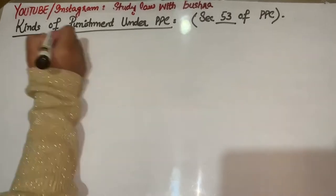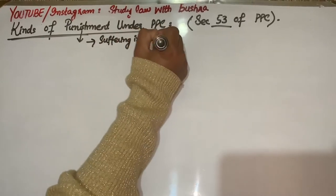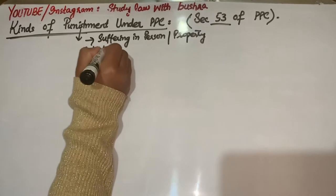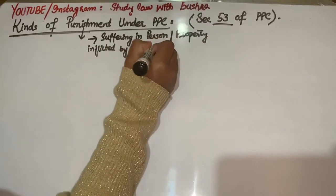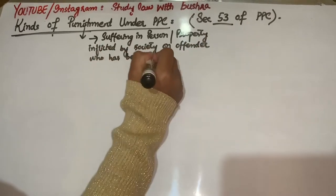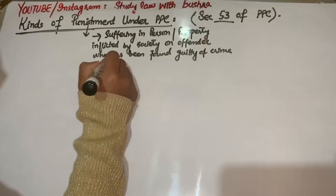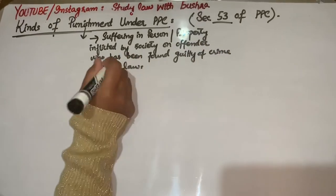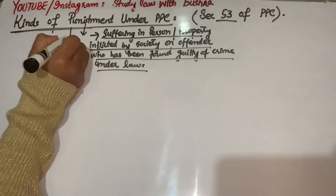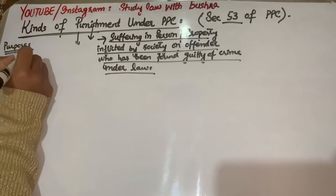Kinds of Punishment under PPC. Before studying Kinds of Punishment, we need to know what the word punishment means. Simply, punishment is the suffering in person or property inflicted by the society on the offender who has been found guilty of a crime under law. Society ki taraf se offender par kisi bhi kisam ki suffering inflict karna, jis offender ne koi bhi crime commit kiya hai law ke under.